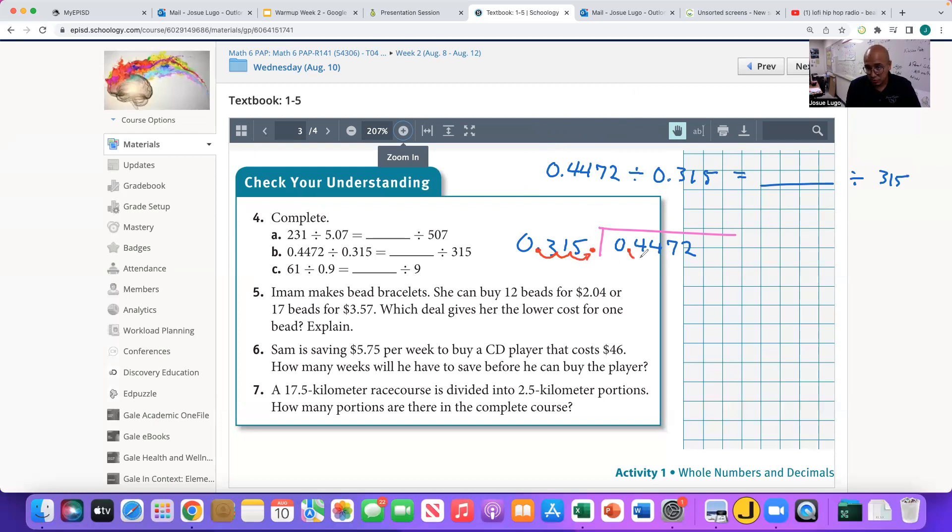Now I must do the same thing here. One time, two times, three times. It is now between the seven and the two, ladies and gentlemen. That means that 447.2 divided by 315 is the same thing as this over here. So that would be your answer to that blank.